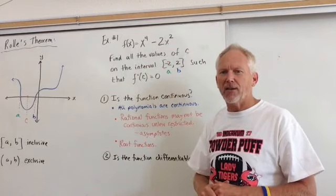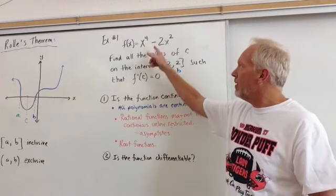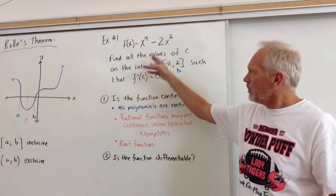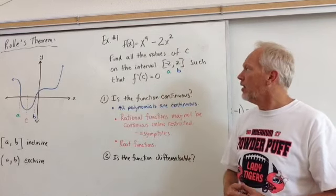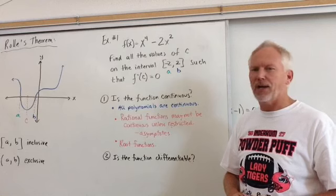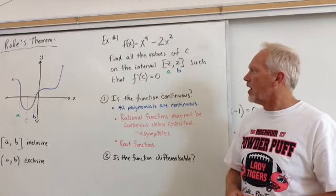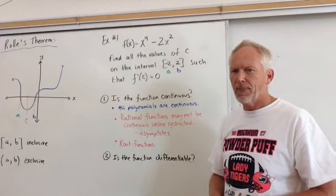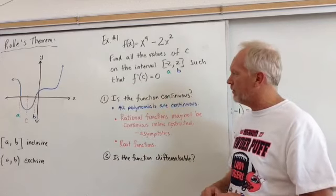Example number one, f of x equals x to the fourth minus 2x squared. And the directions say find all the values of c on the interval negative 2 to 2 such that f prime of c equals zero. So we have to go through the list and ask ourselves,